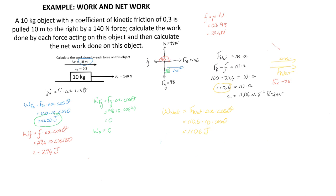A separate way to calculate the net work is simply by adding the work done by all individual forces acting on the object. The net work equals the work by the applied force plus the work by friction plus the work by gravity plus the work by the normal force: 1400 + (−294) + 0 + 0 = 1106 joules. This confirms that the object has gained 1106 joules of energy in the form of kinetic energy, since kinetic energy equals one-half times mass times velocity squared.